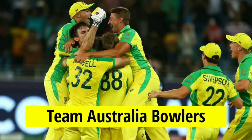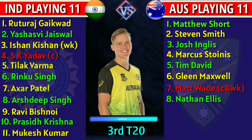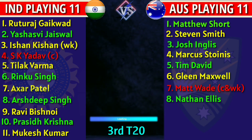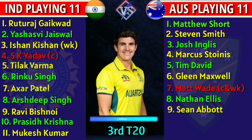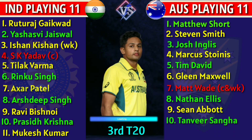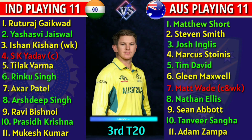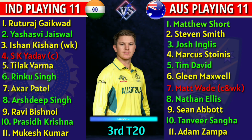Australia team bowlers: 8. Nathan Ellis, right-arm fast bowler. 9. Shane Abbott, right-arm fast bowler. 10. Tanvir Sangha, right-arm spin bowler. 11. Adam Zampa, right-arm spin bowler.